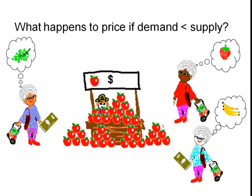What happens to price if demand is less than supply? This is called a surplus — supply is far greater than the amount that will ever be demanded by buyers. Prices are going to drop. Keep in mind the apples won't last forever — eventually they'll get softer and bruised and the farmer won't be able to sell them for anything. It's better to get some money than nothing, so in an attempt to sell the apples, the farmer will gradually start lowering prices. If the price becomes low enough, the grannies may be encouraged to buy apples instead of something else.